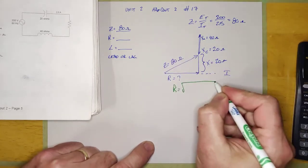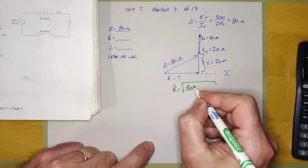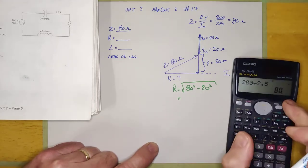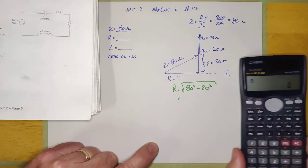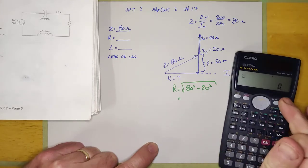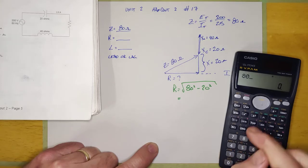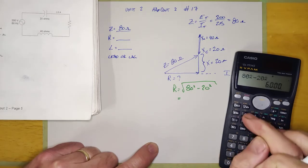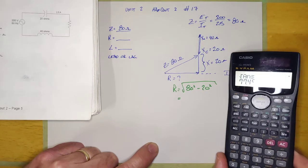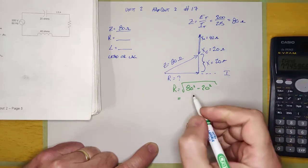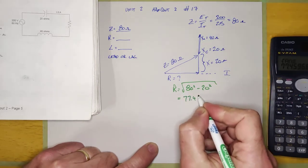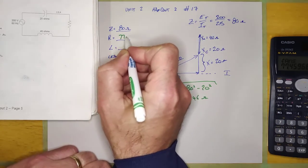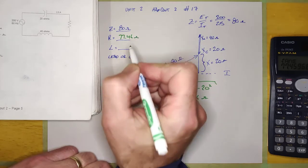So R is going to be the square root of 80 squared minus 20 squared. And if I calculate that, it's 80 squared minus 20 squared equals root equals, looks like it's 77.46 ohms. 77.46 ohms.